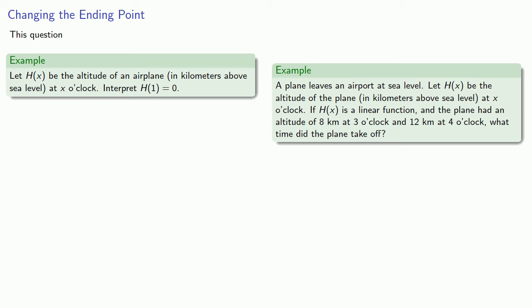This question should have some interpretation like the following: at one o'clock, the altitude is zero kilometers above sea level. That's the ending point of this question, but let's go further. This also means that the plane is at sea level.